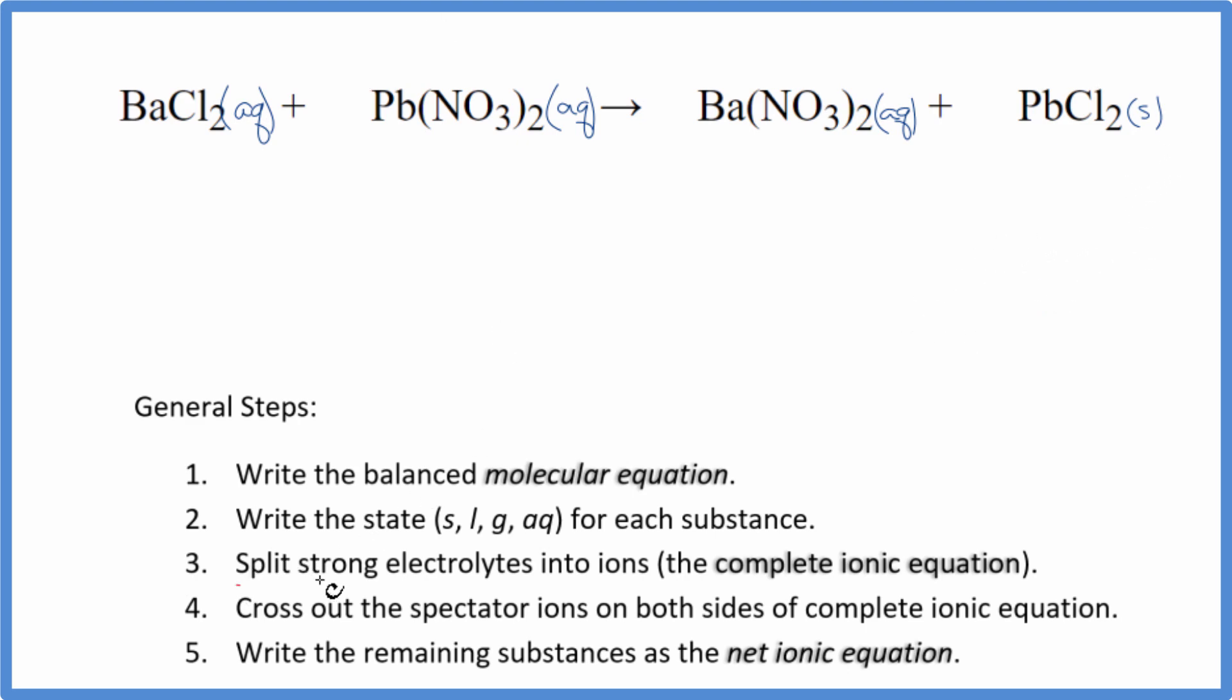We have the states. Now we can split the strong electrolytes into their ions for the complete ionic equation. Barium, group 2 on the periodic table is 2+, and then the chloride ion, 1−. So we have Ba 2+, and I won't write the states now. Let's do that at the end. Plus, we have two of these chloride ions, so 2 Cl−.